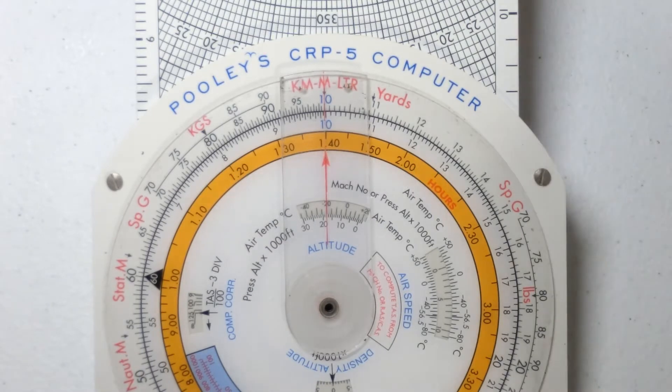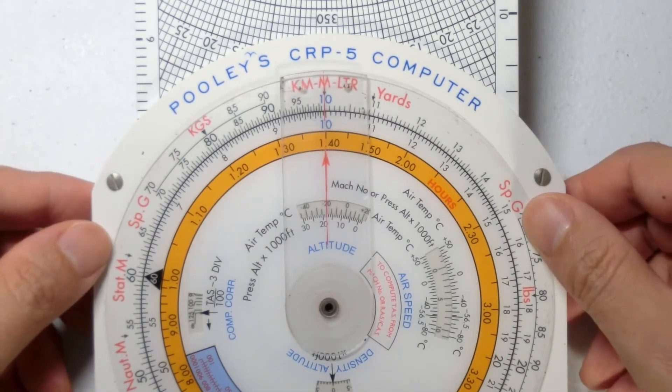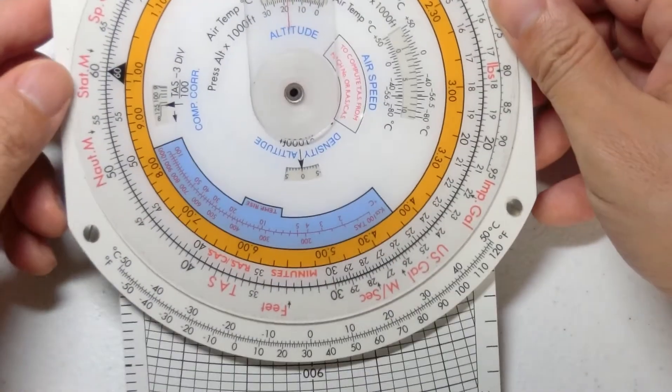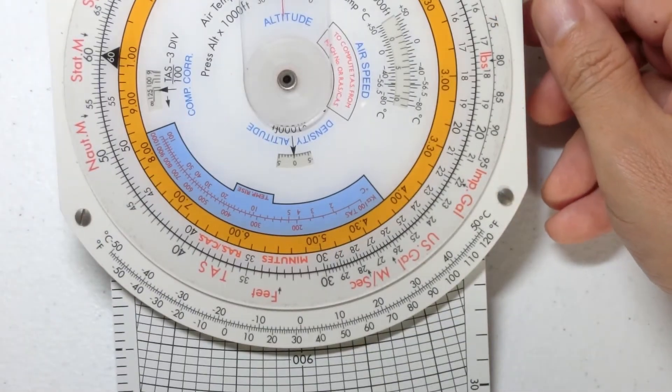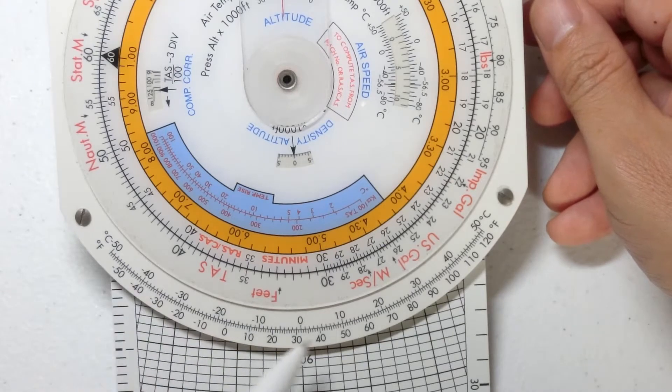Now the temperature conversion is one of the easiest conversions to do on the CRP5 because the temperature conversion is a fixed scale. And this fixed scale is found at the bottom of the CRP5.